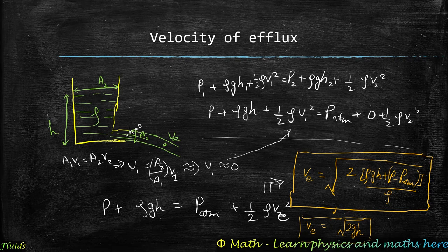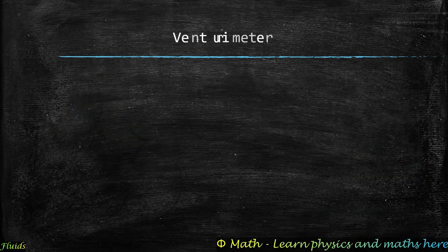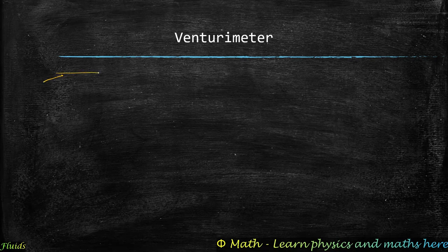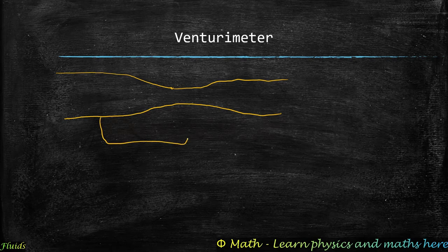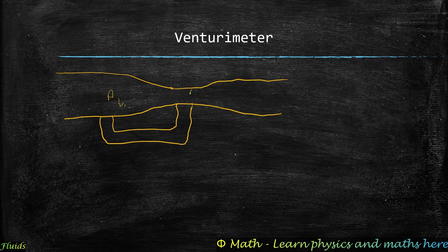Now we look at the venturimeter, which is different from the barometer and manometer. In a venturimeter, fluid flows through a pipe with a constriction. We identify two cross-sections: the wider section with area A1, velocity V1, and pressure P1; and the narrow section with area A2, velocity V2, and pressure P2.